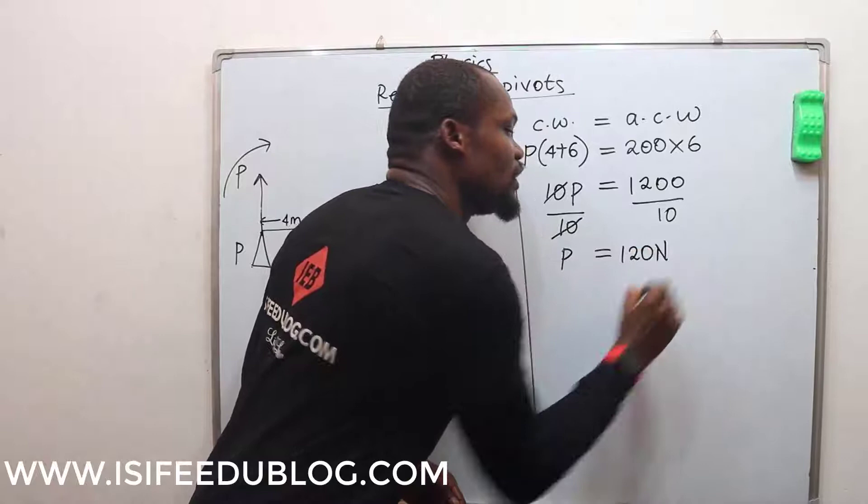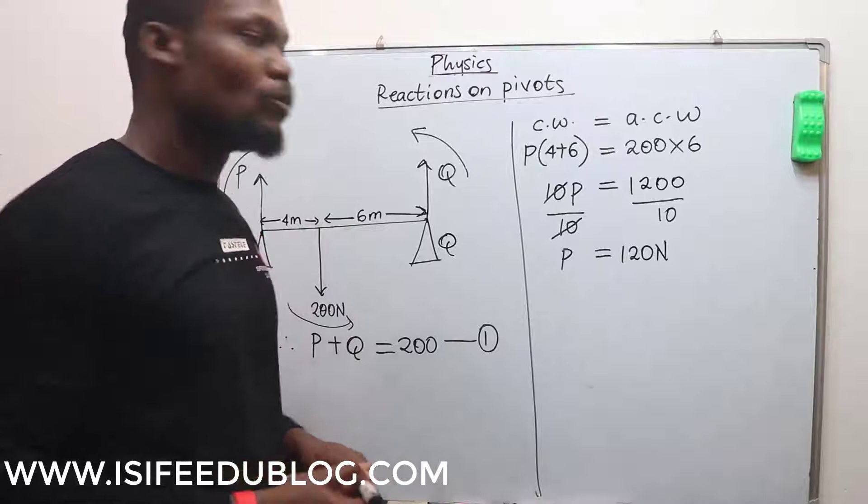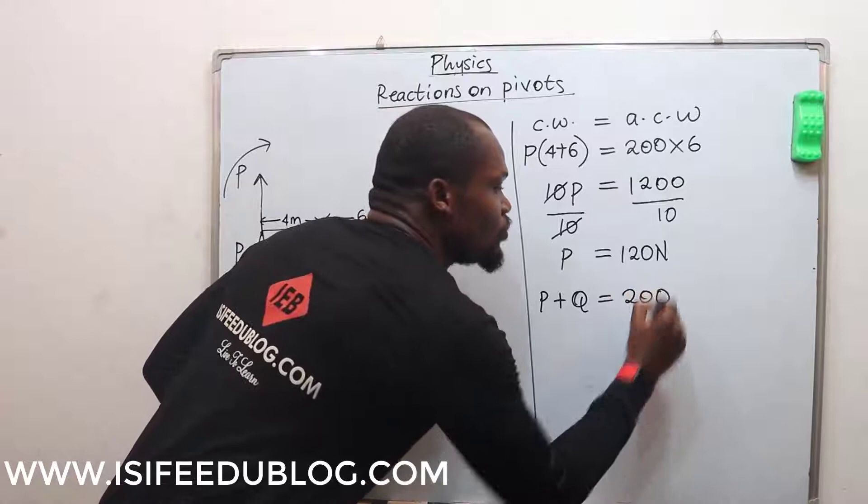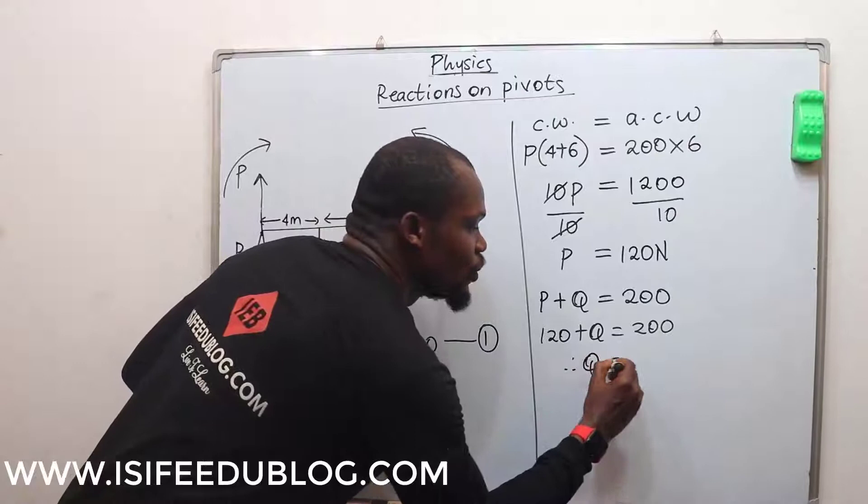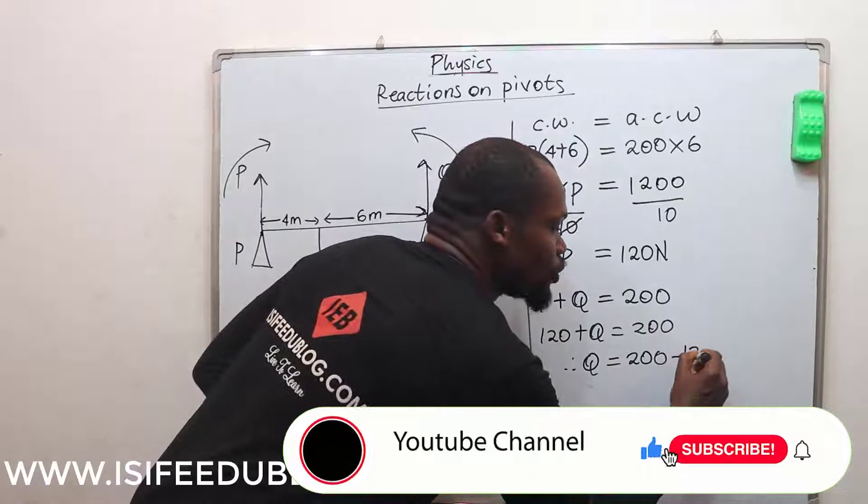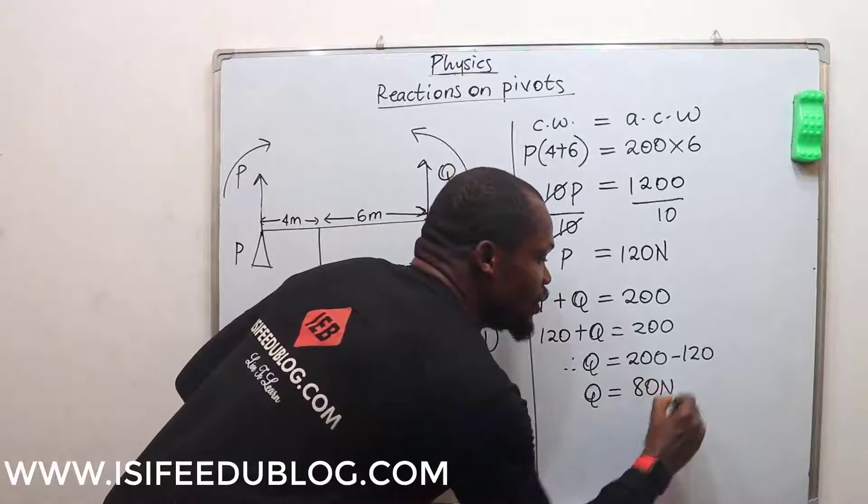Once we've gotten the reaction at P, we can now simply say that, remember, P plus Q equals 200 from equation 1, and P is 120. Therefore, we have 120 plus Q equals 200, and therefore Q is 200 minus 120. Hence, Q equals 80 newtons.